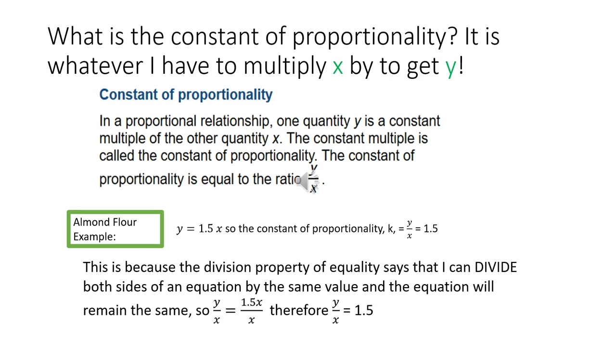So that's a good way to wrap up this topic on proportional relationships, is by looking at the constant of proportionality k. And realizing it's whatever I have to multiply x by to get y. So the constant proportionality means that in a proportional relationship, one quantity y is a constant multiple of the other quantity x. The constant multiple is called the constant proportionality k. The constant proportionality k is equal to the ratio y over x. That's a lot of letters.